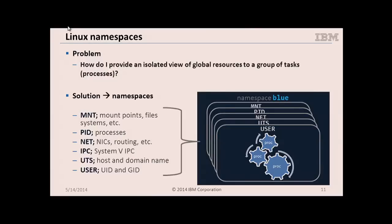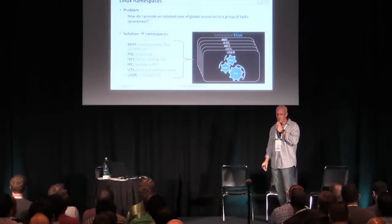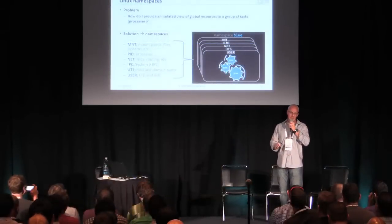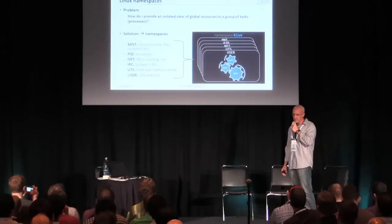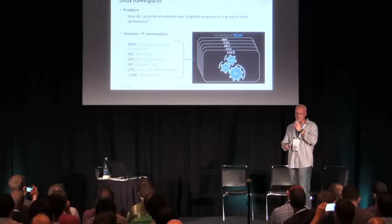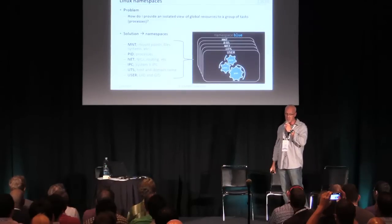The next step is namespaces. This is all about resource isolation. On a traditional Linux system, you have all these global resources — interfaces, mount tables, process IDs, et cetera. What we need to do is provide an isolated view of these for each of our containers, and Linux namespaces allows us to do that. There are about six of them available — one for mount, one for process IDs, and they all work the same but operate on different resource sets.